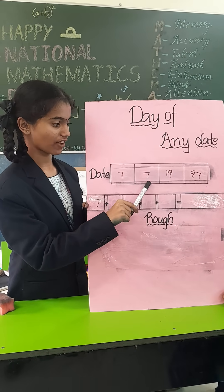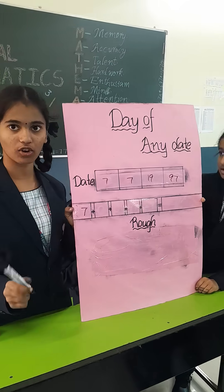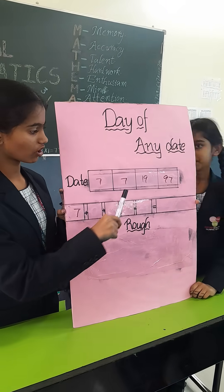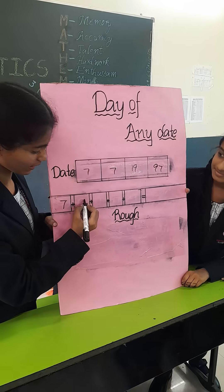7 is the month. So every month has a code. The code for month 7 is 0.